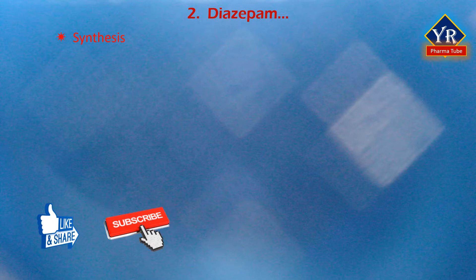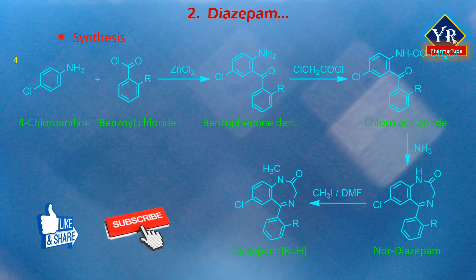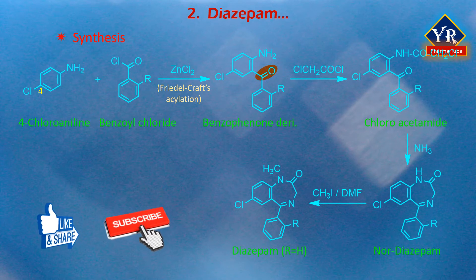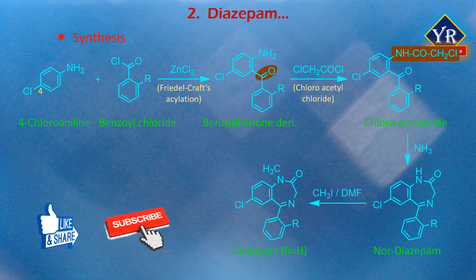Synthesis of Diazepam: The synthesis uses 4-chloroaniline as the starting material. 4-chloroaniline undergoes Friedel-Crafts acylation with the corresponding benzoyl chloride in the presence of a Lewis acid such as zinc chloride to form a benzophenone derivative. The amino group of the benzophenone derivative upon acetylation with chloroacetyl chloride gives the chloroacetamide. This chloroacetamide on heating with ammonia undergoes cyclization to form nordiazepam. Finally, N-methylation of nordiazepam with methyl iodide yields the desired diazepam.